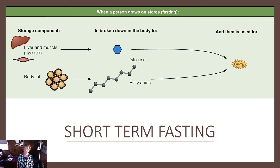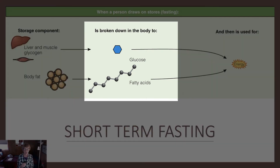Remember, the body prefers to use glucose for energy. So the liver and muscle glycogen will be broken down to glucose — a hydrolysis or catabolic reaction. And the body fat will be broken down. Those triglycerides will be broken down into glycerol, which can be used to form glucose — we'll talk about that when we talk about fitness.